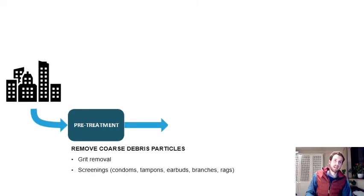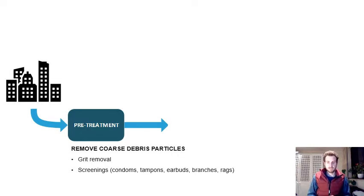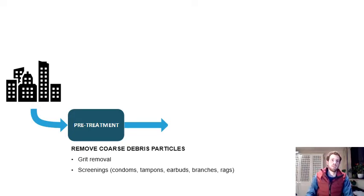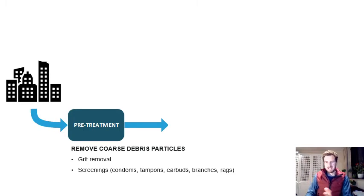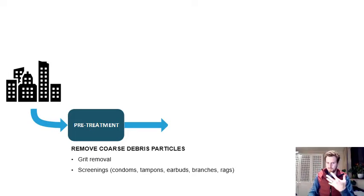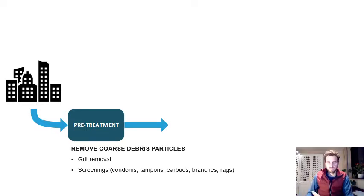Pre-treatment is fairly obvious — we're trying to remove all the coarse debris and particles from the water. Sand, grit, and gravel can settle readily in a grit channel. Further, with screenings, we take the water across a screen — various different types — to remove things that are easy to remove. You can take a rake and lift them out. For large applications, we have complicated mechanical screens which are constantly cleaning themselves.